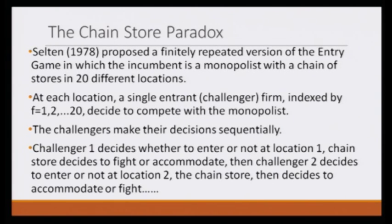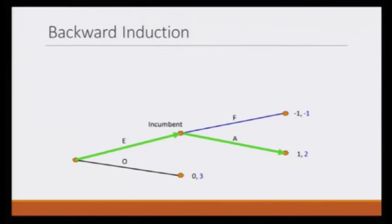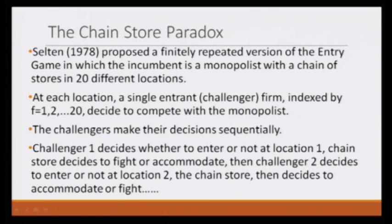This is the setting. Selten, who also won the Nobel Prize for his contribution in game theory, proposed a finitely repeated version of an entry game. In this entry game, we have an entrant — we can call this entrant a challenger — and we have an incumbent. The entrant can either decide to enter the market or opt out. If the entrant decides to enter, the incumbent either decides to fight or accommodate, and accordingly they get the payoff. The details you should refer back to the extensive form game.